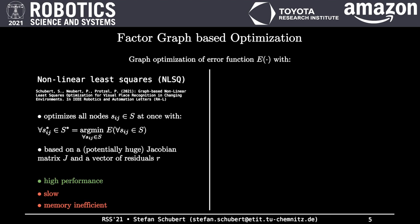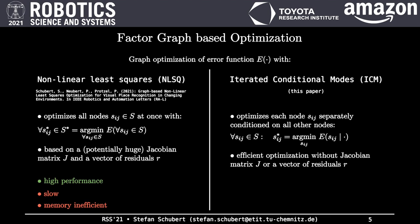In order to maintain or even improve the performance while being faster and much more memory efficient, we proposed an iterated conditional modes or ICM-based optimization scheme. The basic idea is to optimize each node in the graph separately, conditioned on all other nodes, which tremendously simplifies the optimization procedure and fully avoids the usage of potentially huge matrices like the Jacobian matrix and the vector of residuals. We show in our paper that our ICM-based approach outperforms the NLSQ-based approach while being much faster and memory efficient.